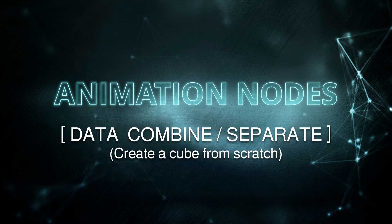In this tutorial I'm going to talk about data combine and separate operations — basically extracting information from one object or building an object by combining several elements. An object is basically a collection of different elements or data types which defines how it looks and behaves.